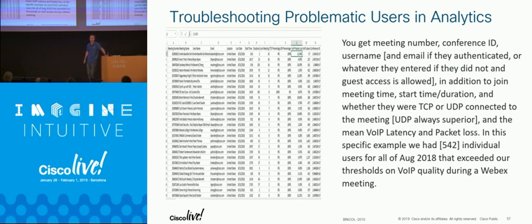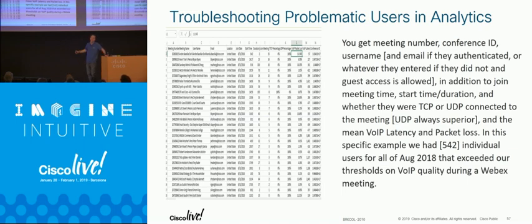Now I don't even have to worry about who's reporting problems to me — I can just run a report and find who is actually having problems, then try to take steps to alleviate their pain. That's pretty amazing. Question about the predefined limits: right now they're fixed. Based on years and years of data, we know that latency beyond 250 milliseconds is noticeable, packet loss beyond 2% can be noticeable if TCP-connected, and jitter has a predefined figure of 30 milliseconds.